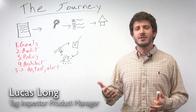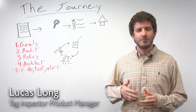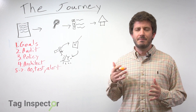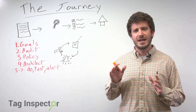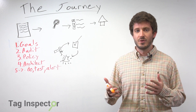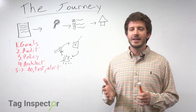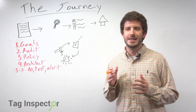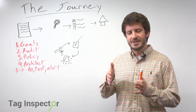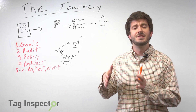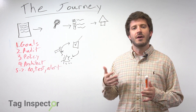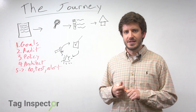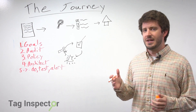I wanted to start off this series with an overview of the mental framework that we try to get a lot of our clients and people that we speak with thinking about — how to think about any sort of tag management issue or initiative. How we like to think about this is in the process of a journey. There are different steps and different pieces along the way that you need to account for, and you realistically have to go through these in order to be successful at the tail end.